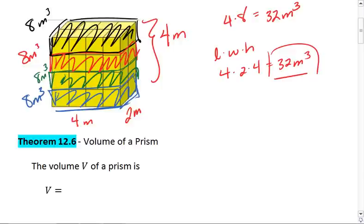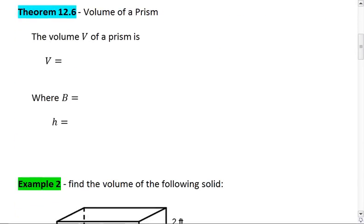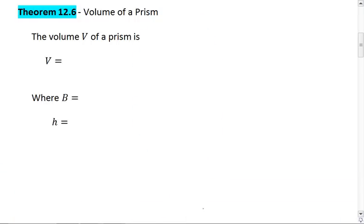This brings us to theorem 12.6, the volume of a prism. The volume of a prism is B times h, where B is the area of the base, and h is the height of the prism.